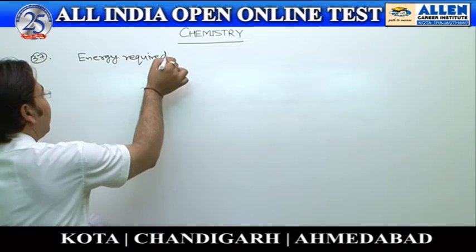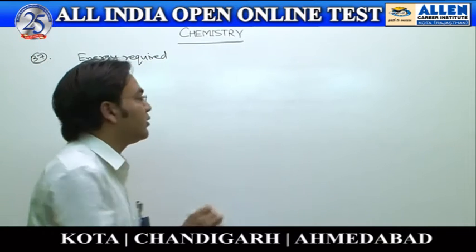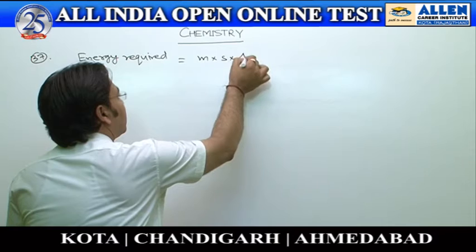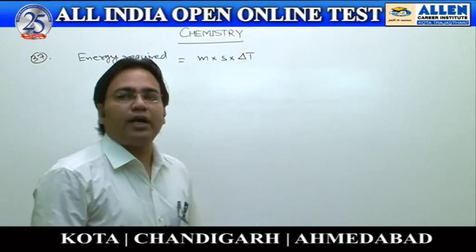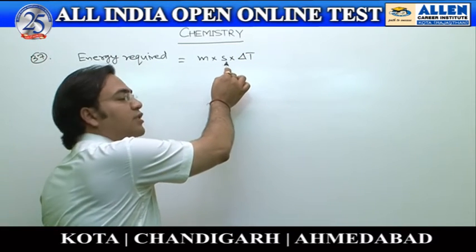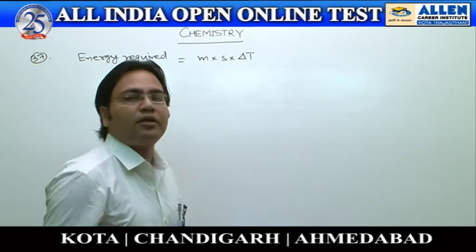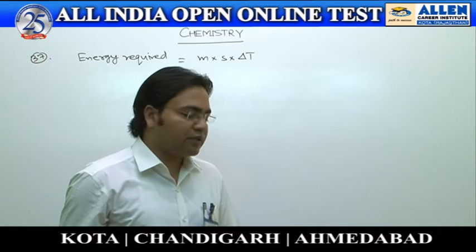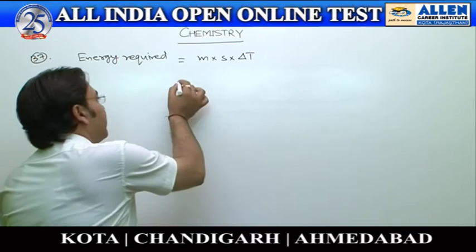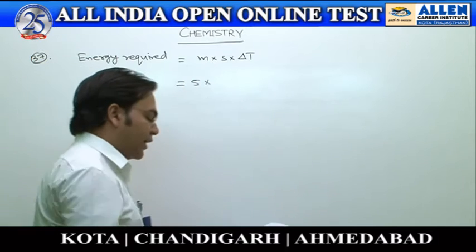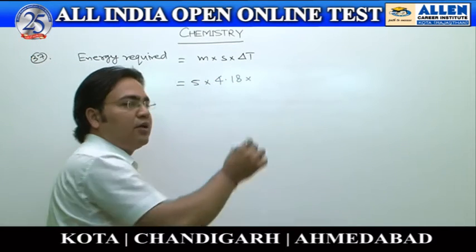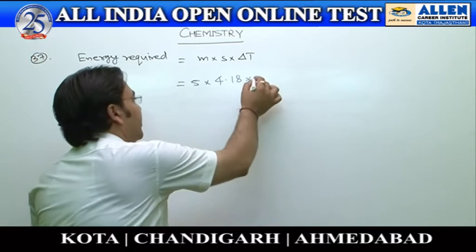Initially, we have to calculate the energy required, which equals m·s·ΔT, where m is the mass, s is the specific heat, and ΔT is the rise in temperature. As per the question, mass is 5 grams, specific heat is 4.18, and the rise in temperature is 1 degree Celsius.